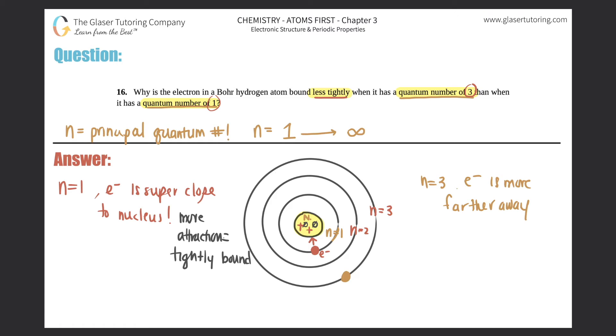So will it have a greater attraction than the one that's really close? No. So this has less attraction, which means that it's loosely bound.